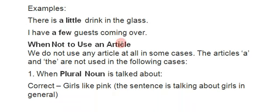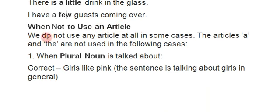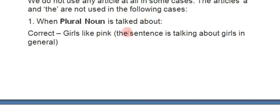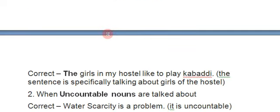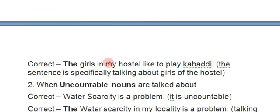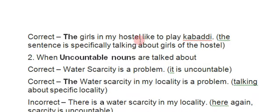Now, when NOT to use an article. We do not use any article in some cases. First: 'a' and 'the' are not used when talking about plural nouns in general. For example: 'Girls like pink' — no article used. But 'The girls in my hostel like to play' is correct, because 'the girls' here refers to specific girls in the hostel.